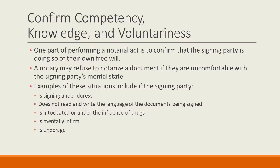Another essential part of the notary public role is to identify that the signing party in a transaction is doing so of their own free will. This generally breaks down into three factors: competency, knowledge, and voluntariness. If a signing party lacks one of these — for example, if they are not competent to sign a document because they are underage — then you should refuse to notarize the document.